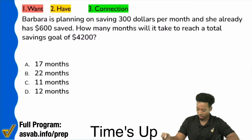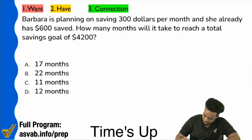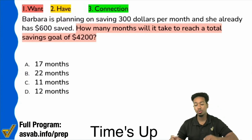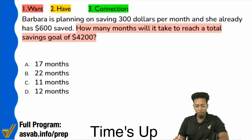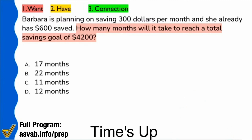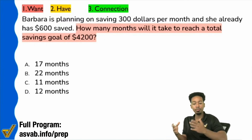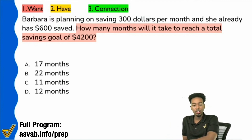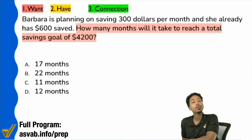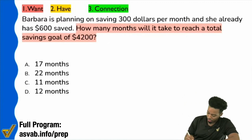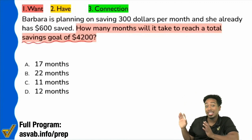So the first step here is to read the question right here. Let's highlight that. How many months will it take to reach a total savings goal of $4,200? They already gave us the total savings goal. The goal is $4,200 right there — they give you that.